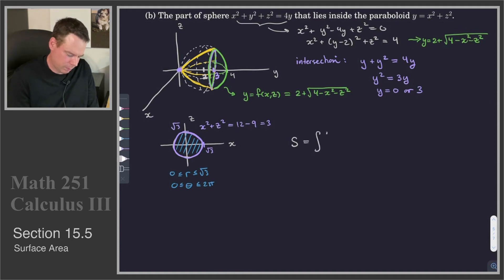So now we can go ahead and write down what the surface area is. It's the integral over this disk here, this disk d in the x, z plane. We are integrating the square root of 1 plus f sub x plus f sub z, each of them squared, dA.